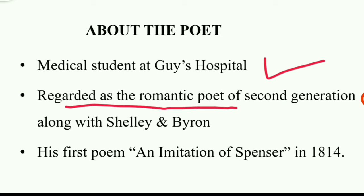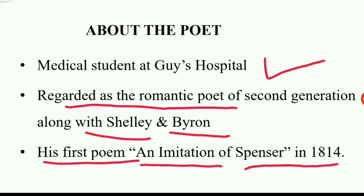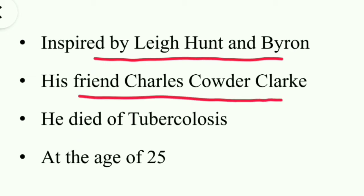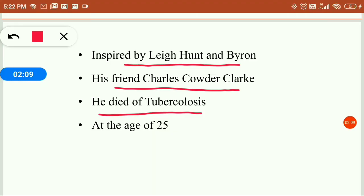He is regarded as the romantic poet of the second generation along with Percy Bysshe Shelley and Lord Byron. His first poem, 'An Imitation of Spenser', is an extremely important work which was published in the year 1814. He was inspired by Leigh Hunt and Byron. His friend Charles Cowden Clarke was very intimate to him.